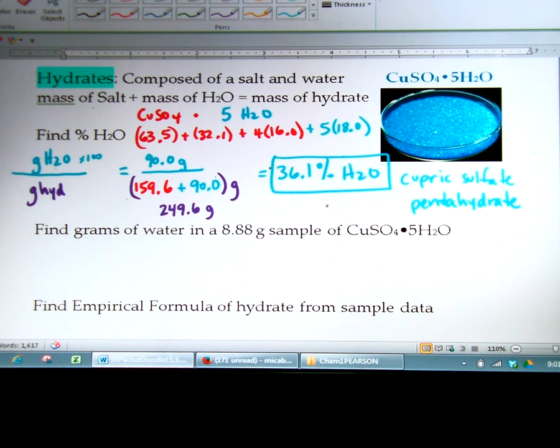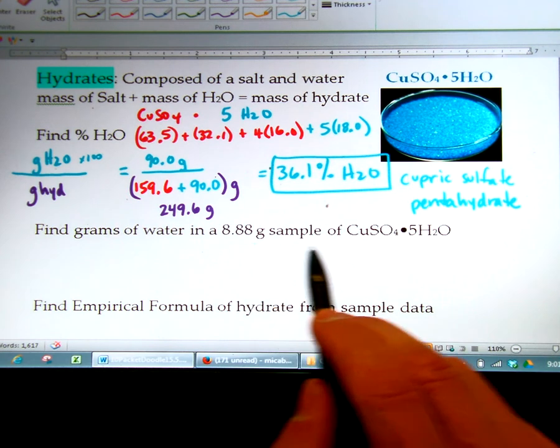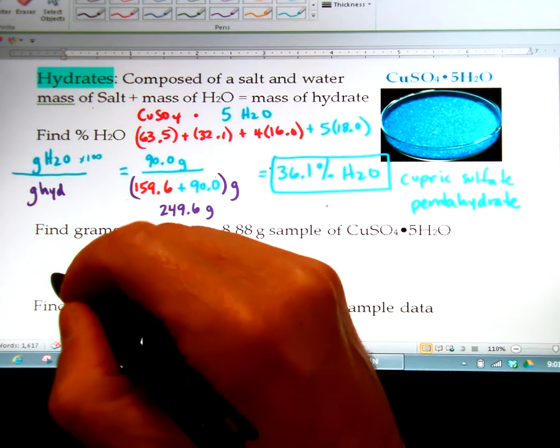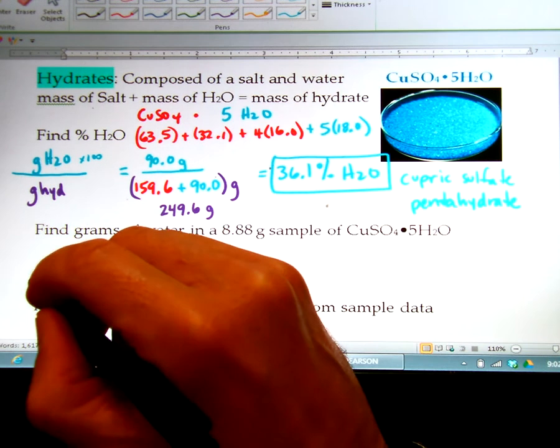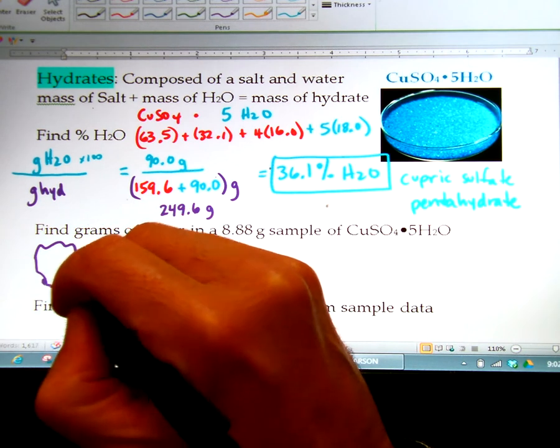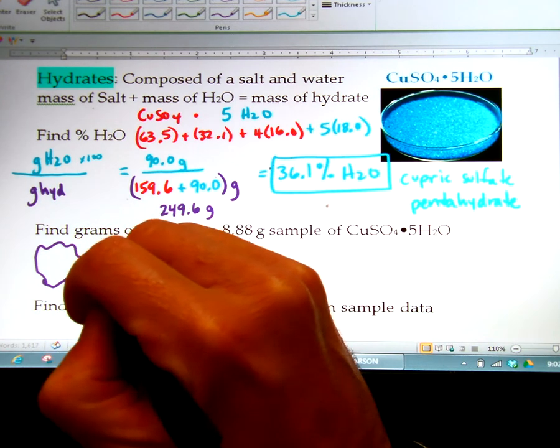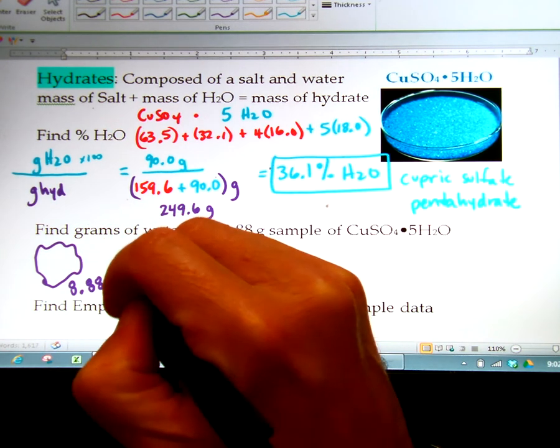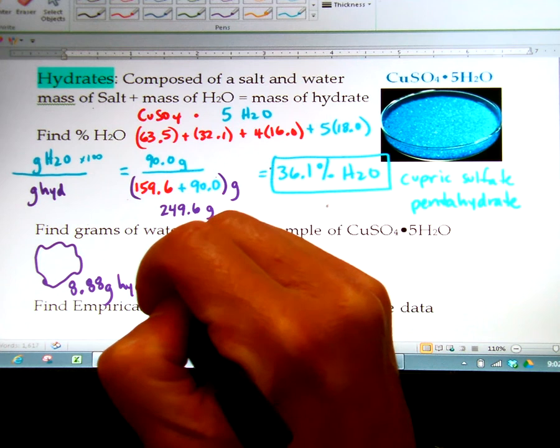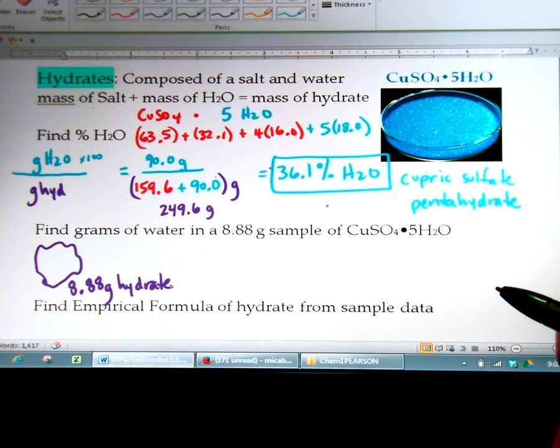In addition to finding out the percent of water, let's say that you had 8.88 grams of this hydrate. So I give you a bunch of this hydrate, and the hydrate weighs 8.88 grams. And I ask you, how much water is in that?